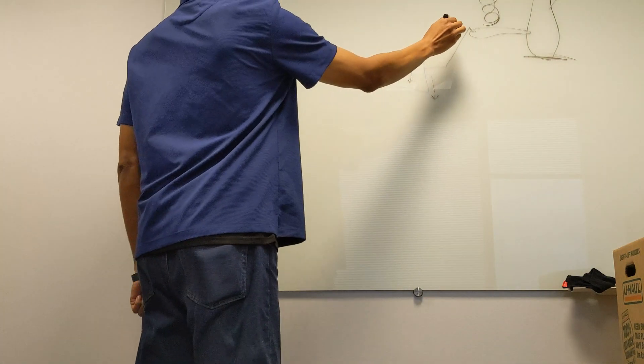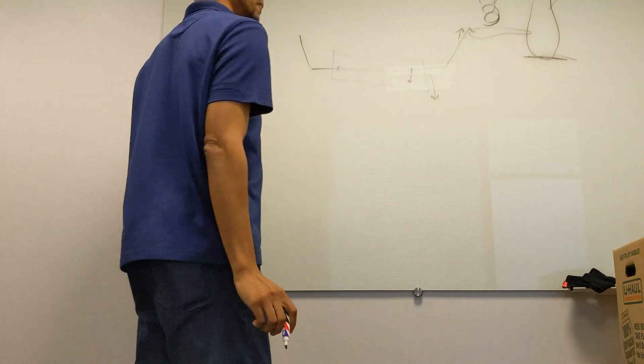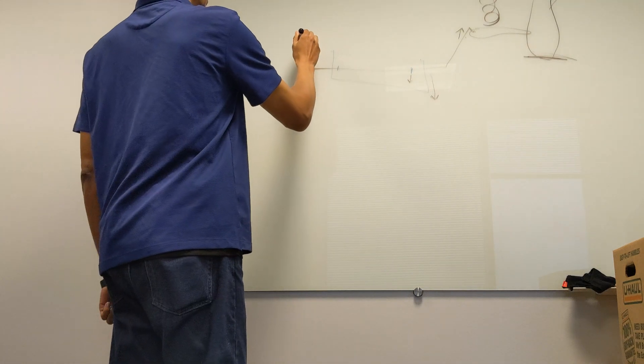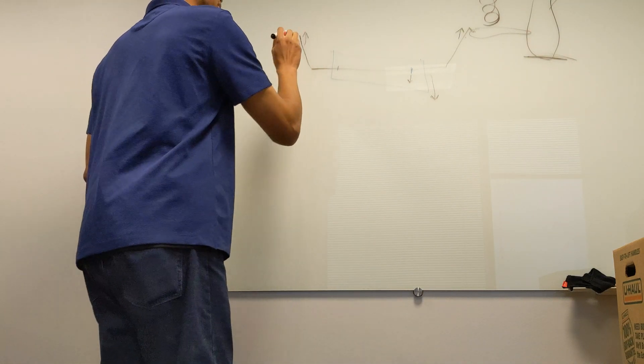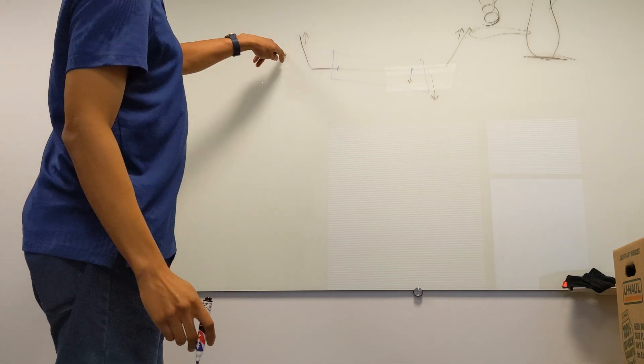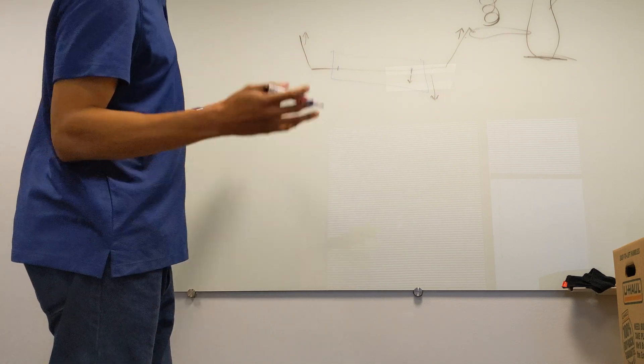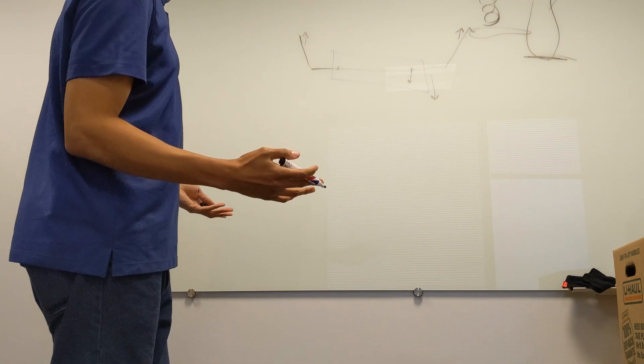But whatever happens on this side is also going to happen on this side. So we have another force that happens on this side. And this is a disadvantage, or you could say advantage, to sway bars.